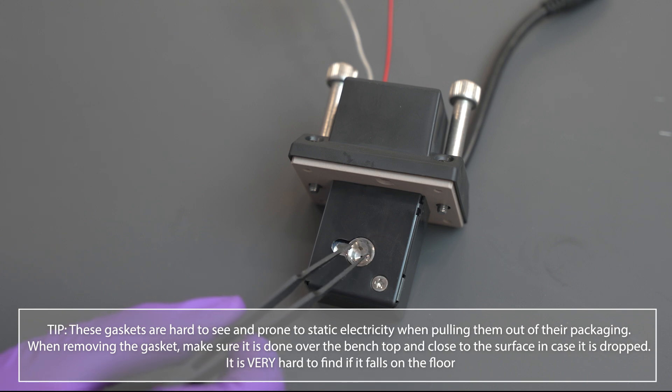These gaskets are hard to see and prone to static electricity when pulling them out of their packaging. When removing the gasket, make sure it is done over the bench top and close to the surface in case it is dropped. It is very hard to find if it falls on the floor.